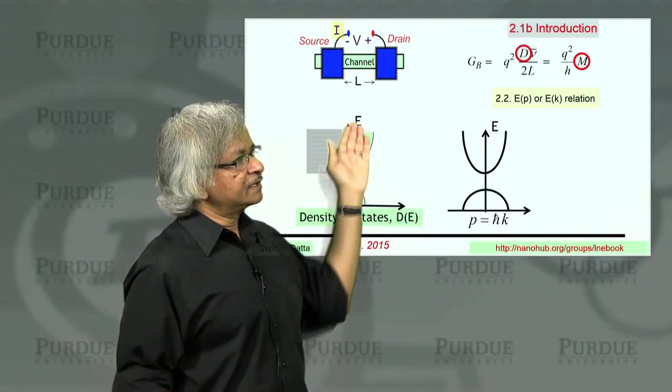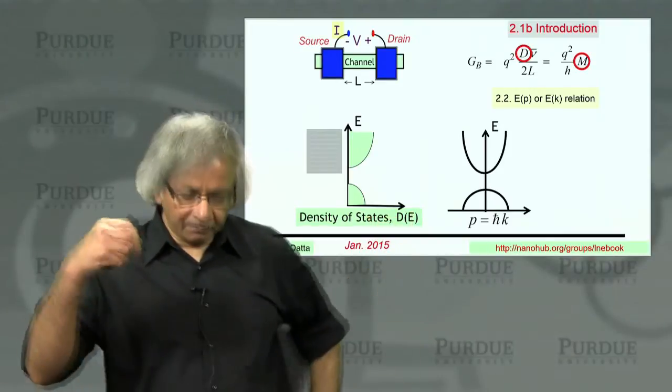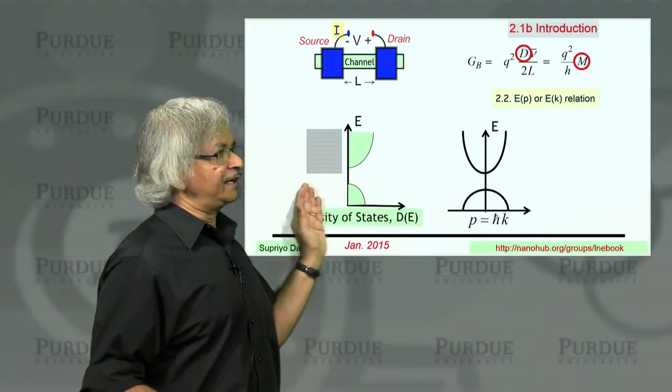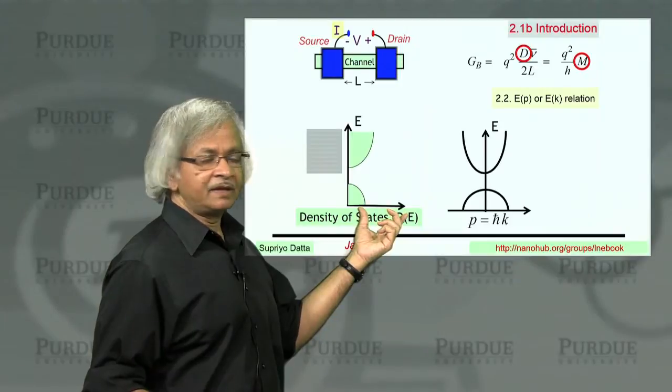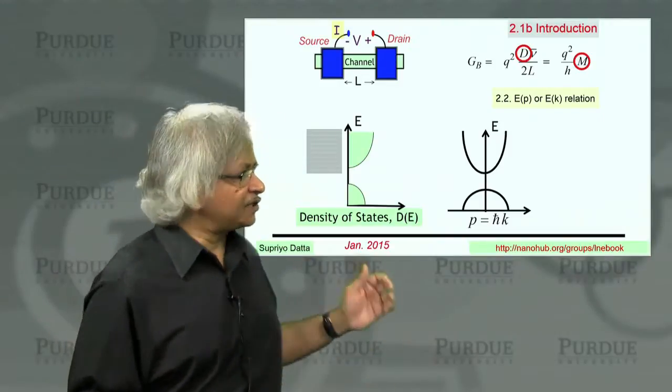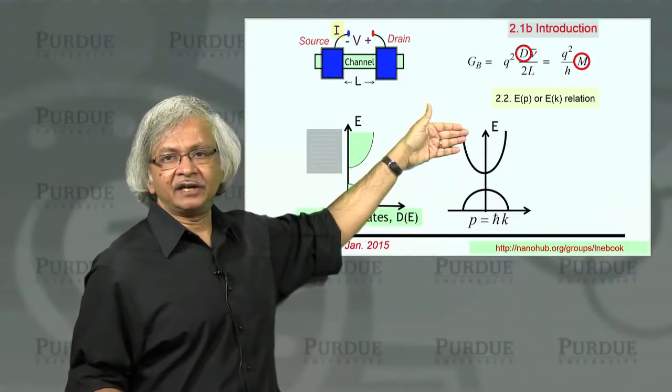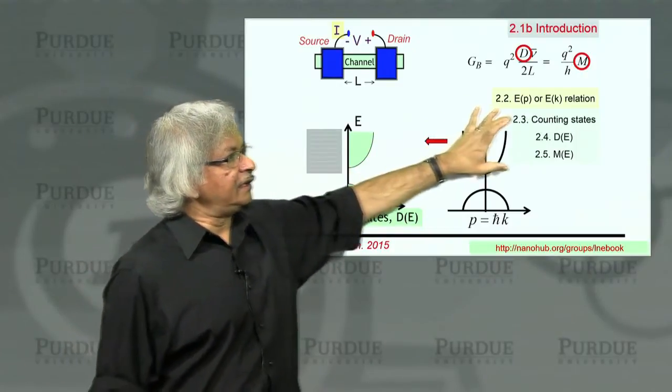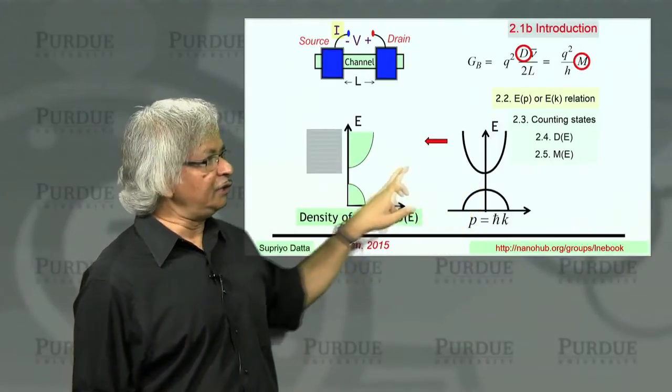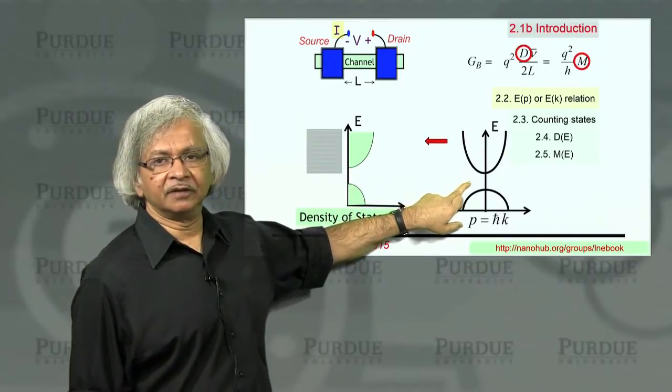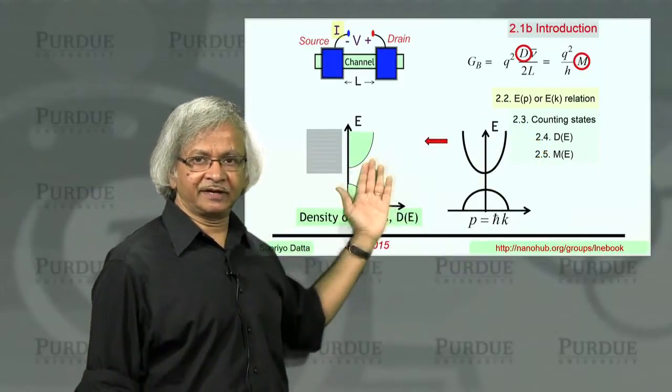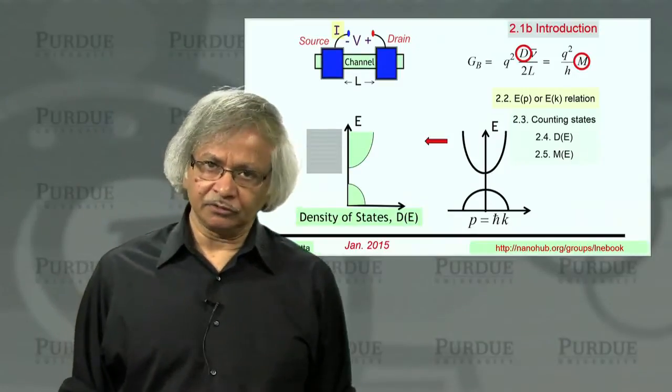And the energy is a function of that momentum. Whereas here what we have is energy, and this axis is the density of states, number of states per unit energy, which of course has to be positive. And so there is no negative side to this graph. Superficially they look kind of similar, but it's very different. One of our objectives is, after we introduce this idea of energy-momentum relation, to discuss in the next three lectures how to translate that curve into that curve. That is how to start from an energy-momentum relation and get a density of states or this number of modes out of it. That's what the next three lectures are about.